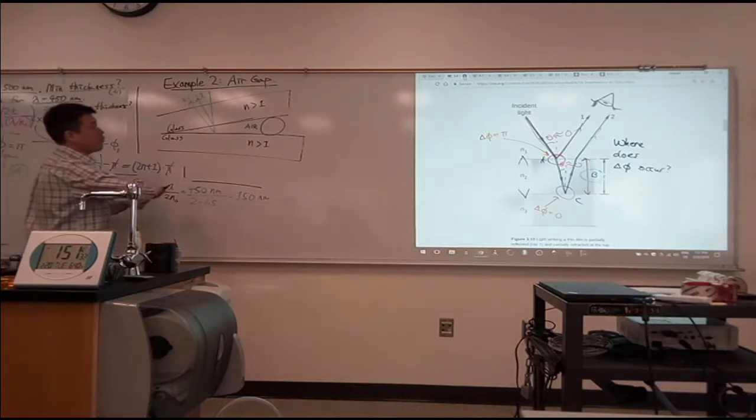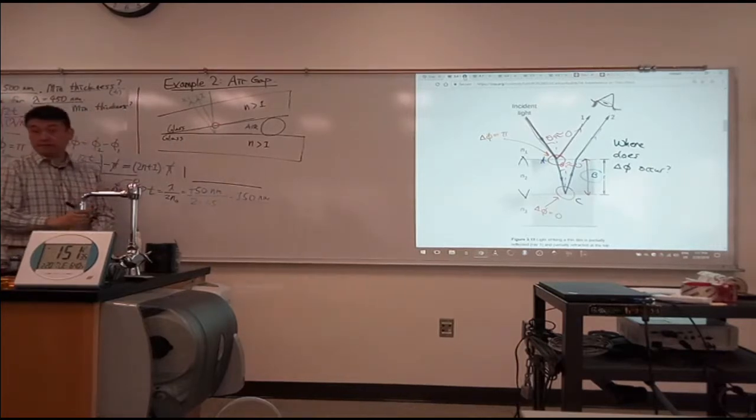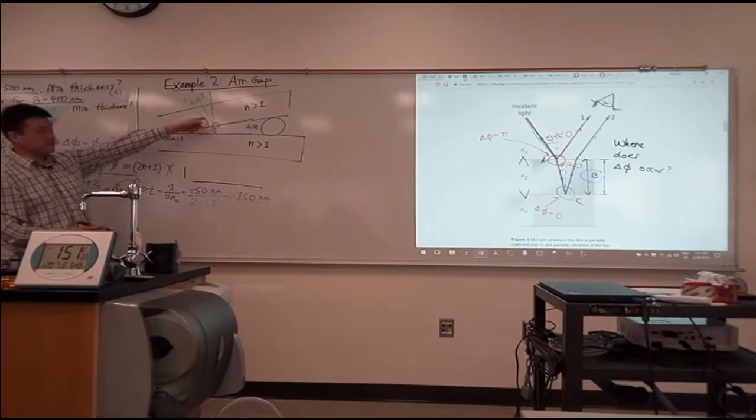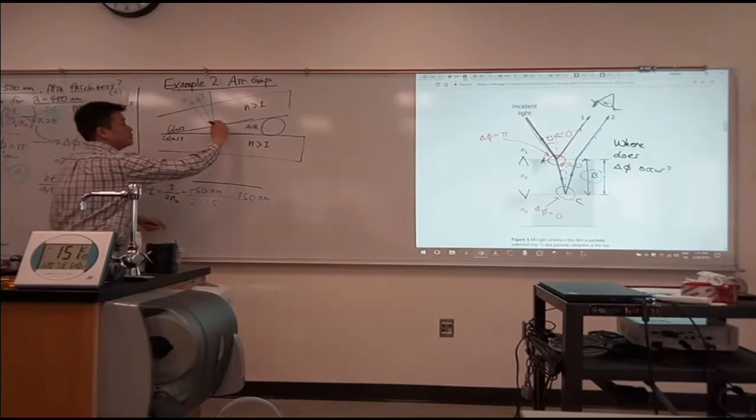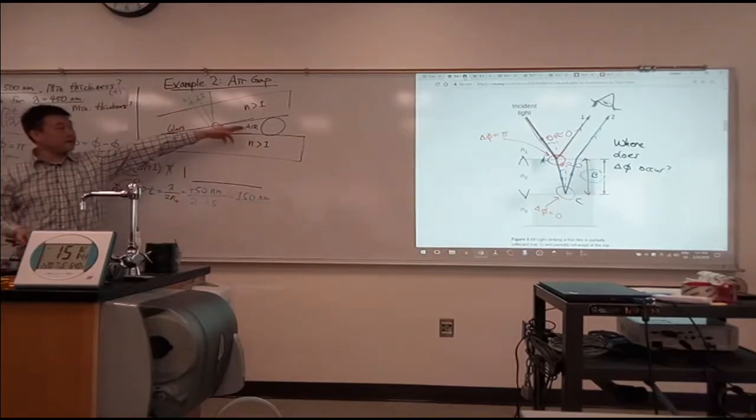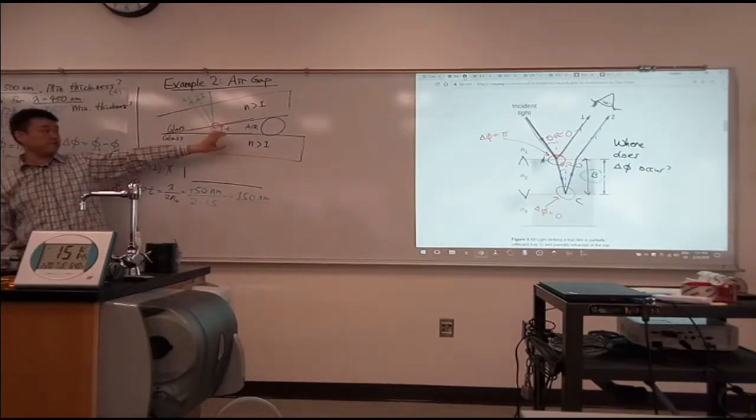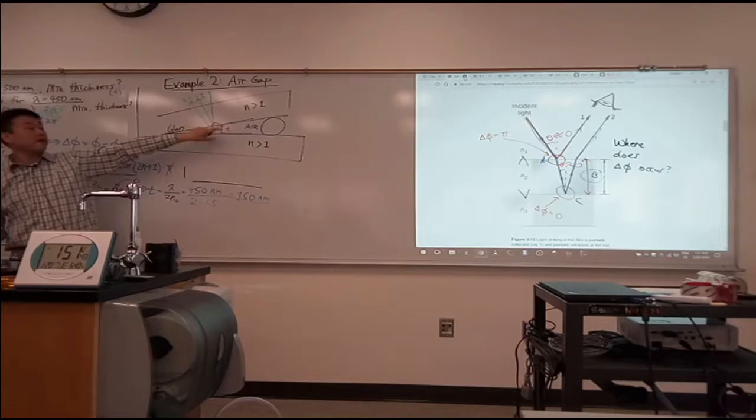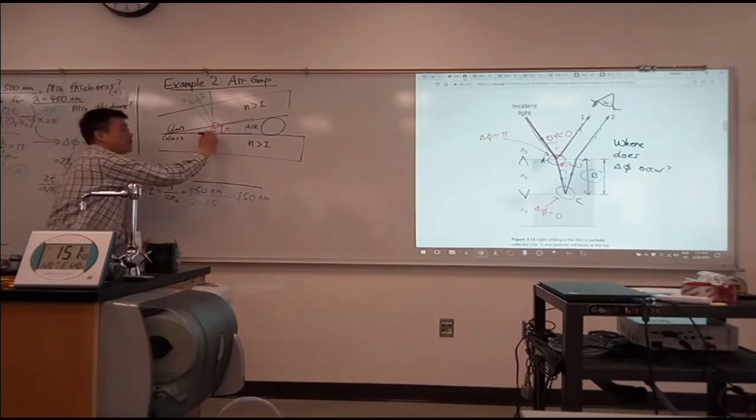So you look at the point where beam one is reflecting. You look at the thickness that the beam two is going through, some kind of thickness, so you'll have to double it. It's air, index of refraction one, so you don't have to change the wavelength here. And you would look at the reflection here.